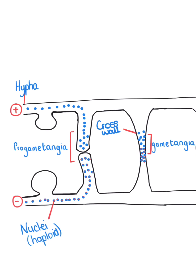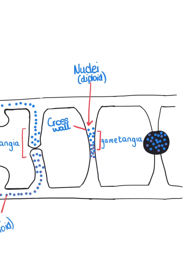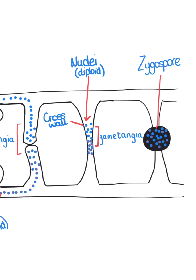The nuclei from positive and negative strains fuse to form diploid nuclei. Following this, a zygospore forms around the diploid nuclei.